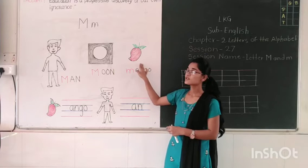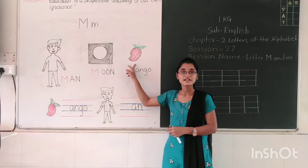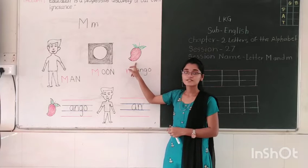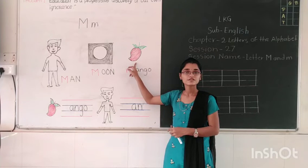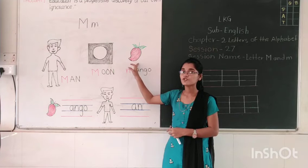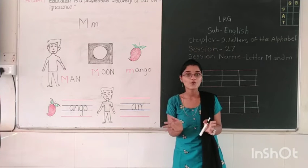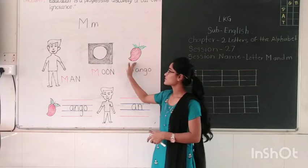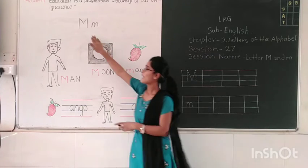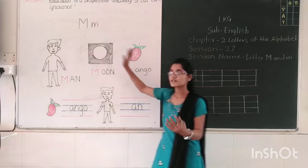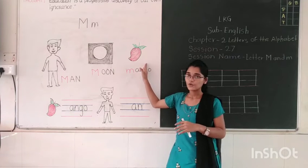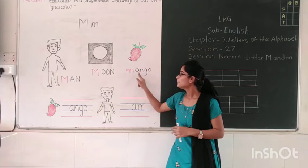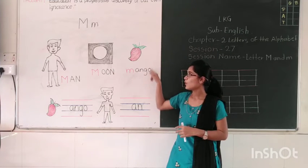Now next picture — which picture is this? This is one type of fruit. Which fruit is this? What is the name of this fruit? Mango. Do you like to eat mango? Yes, so this is the picture of mango. M says m, and M for mango. And what is the spelling of mango? M-A-N-G-O, mango.